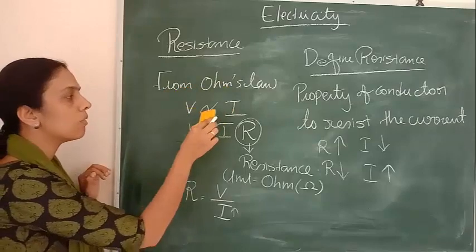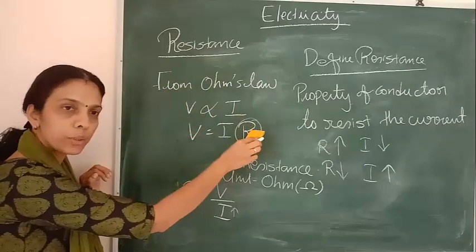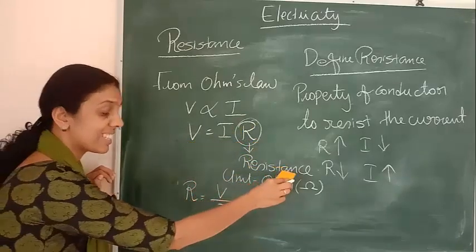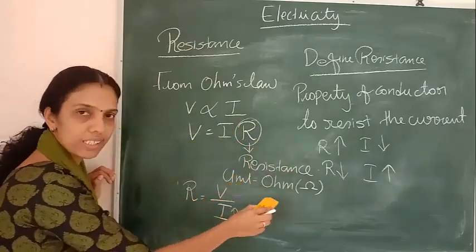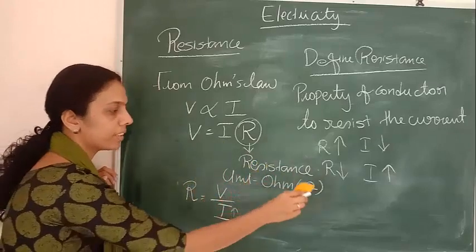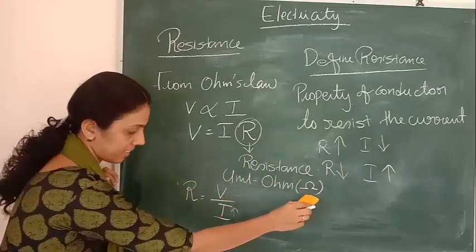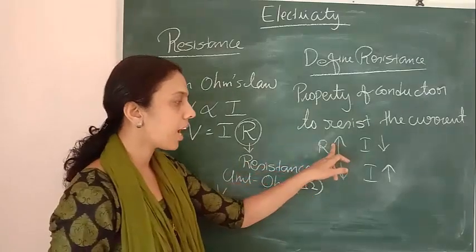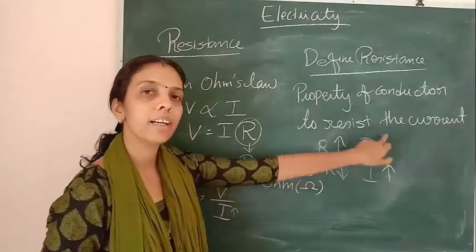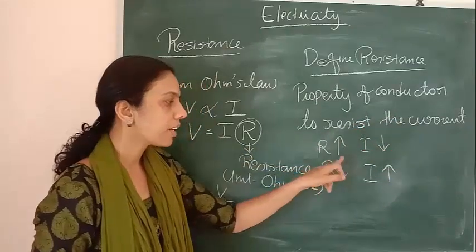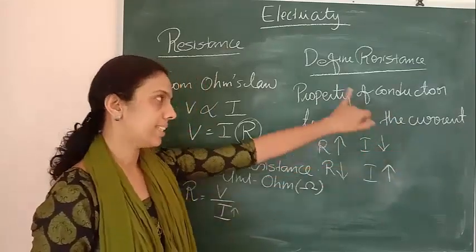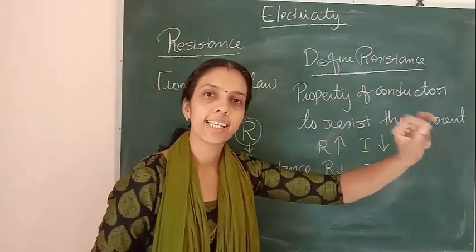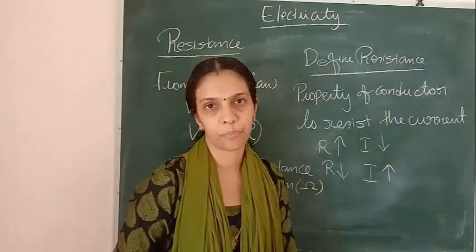From Ohm's law, we wrote it as V is proportional to I, that is, V equals I into R, where R is the resistance. Unit of resistance is Ohm. R equals V by I. If R increases, current will decrease. If R decreases, current will increase. It is the property of a conductor to resist the flow of current.